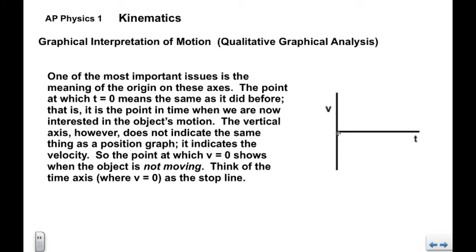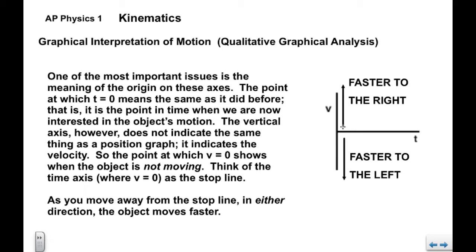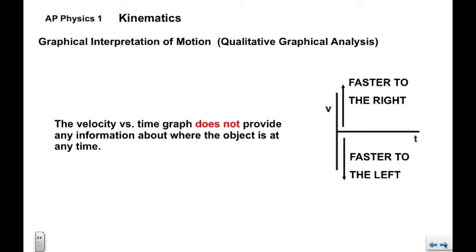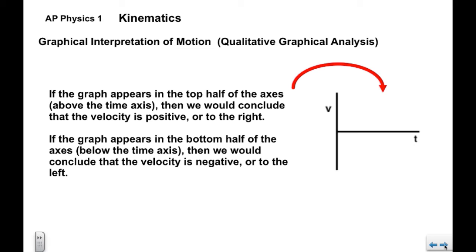Think of the time axis as a stop line — this is where v equals zero. As you move away from this stop line in either direction, you're moving faster. If the graph moves above the stop line, the object is moving faster to the right. If it moves below, it's moving faster to the left. The velocity graph never provides any information about where the object is. If the graph appears in the top half of the axis, the velocity is positive or to the right. If below, the velocity is negative or to the left.